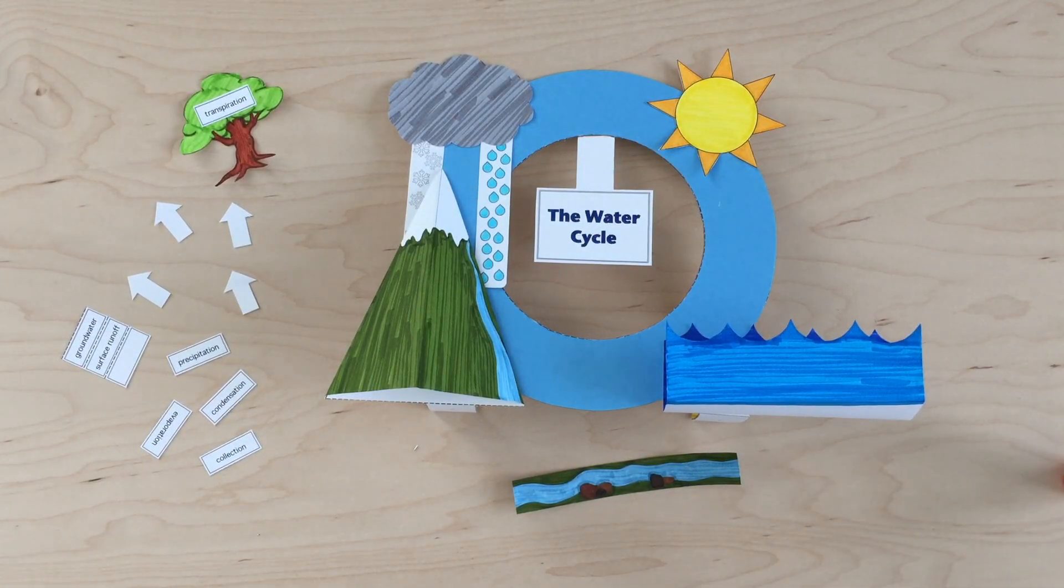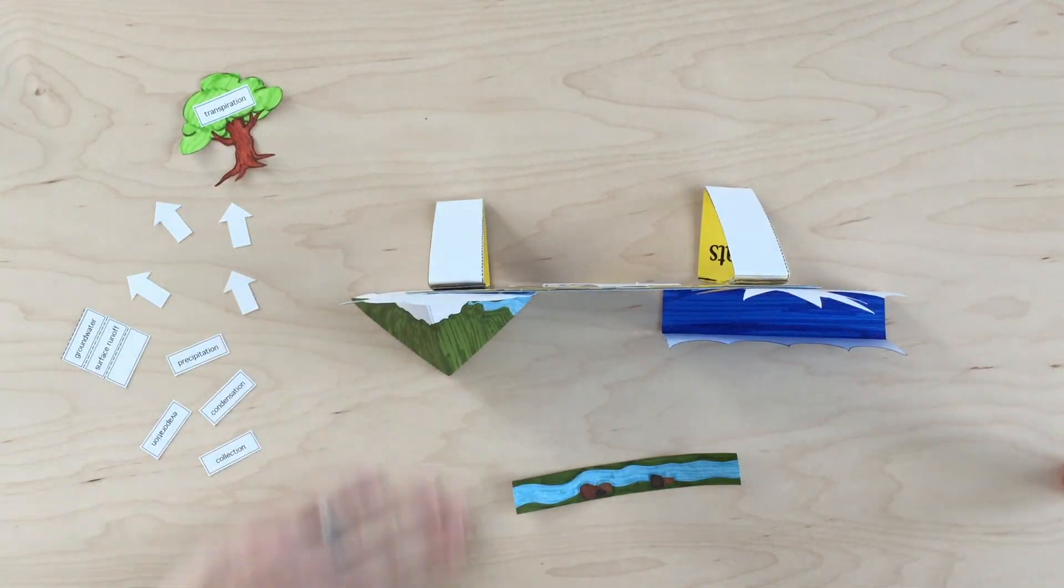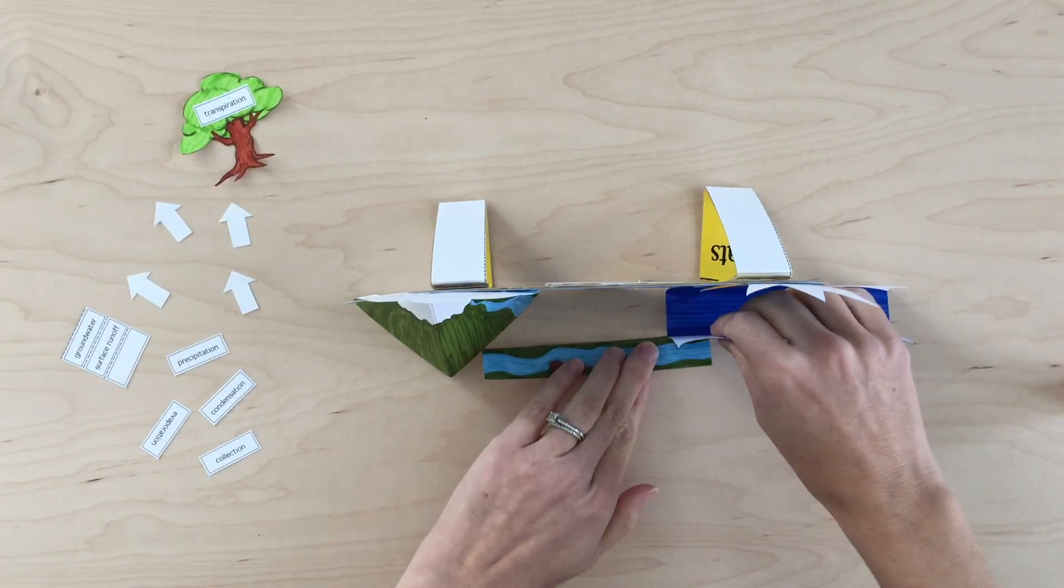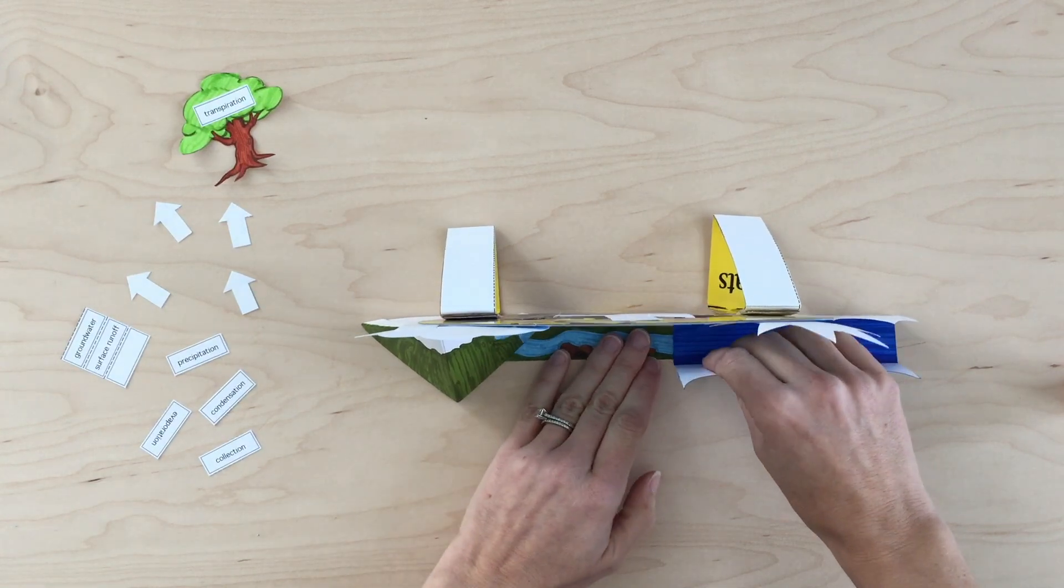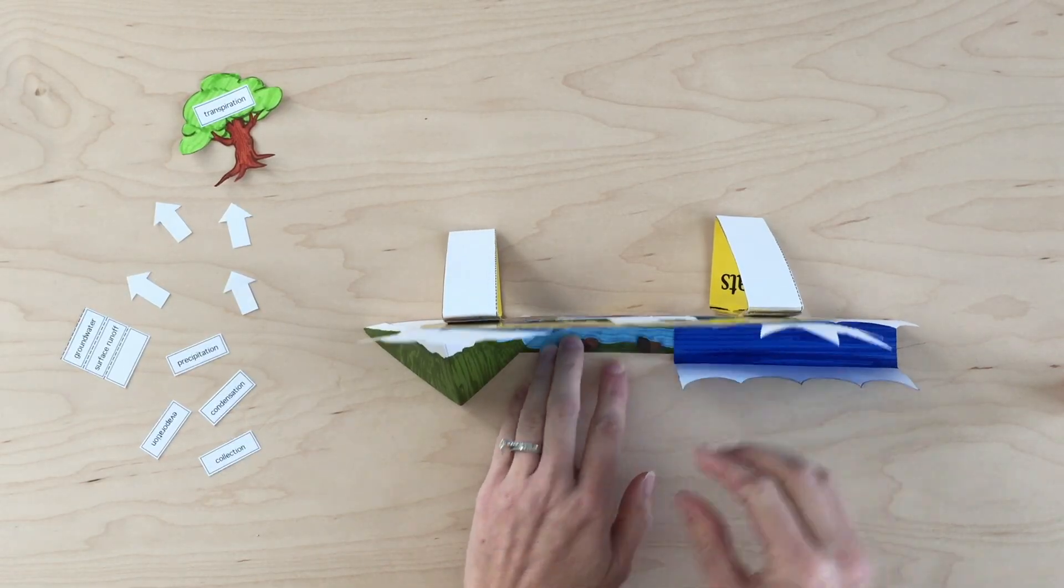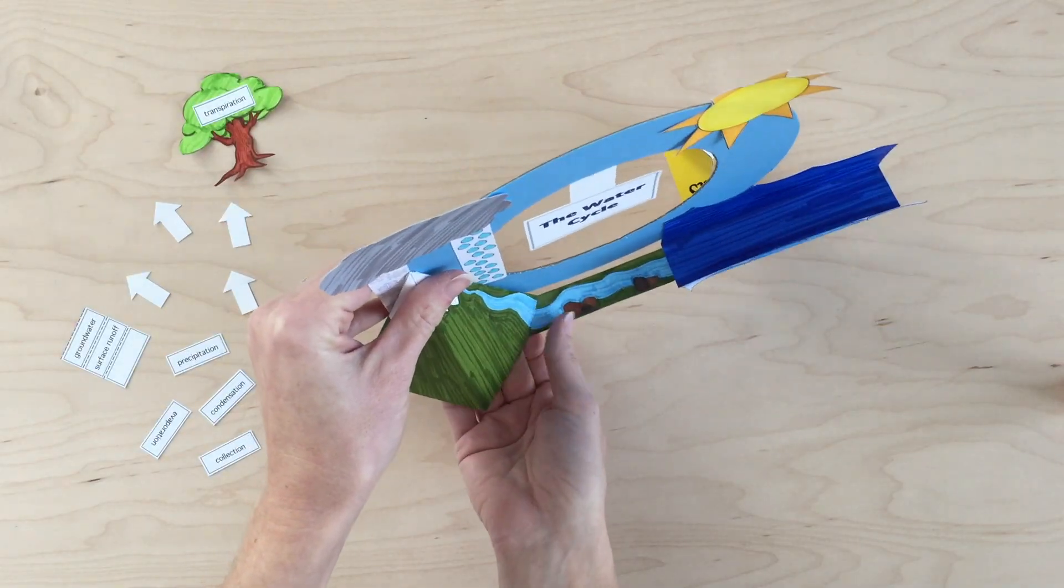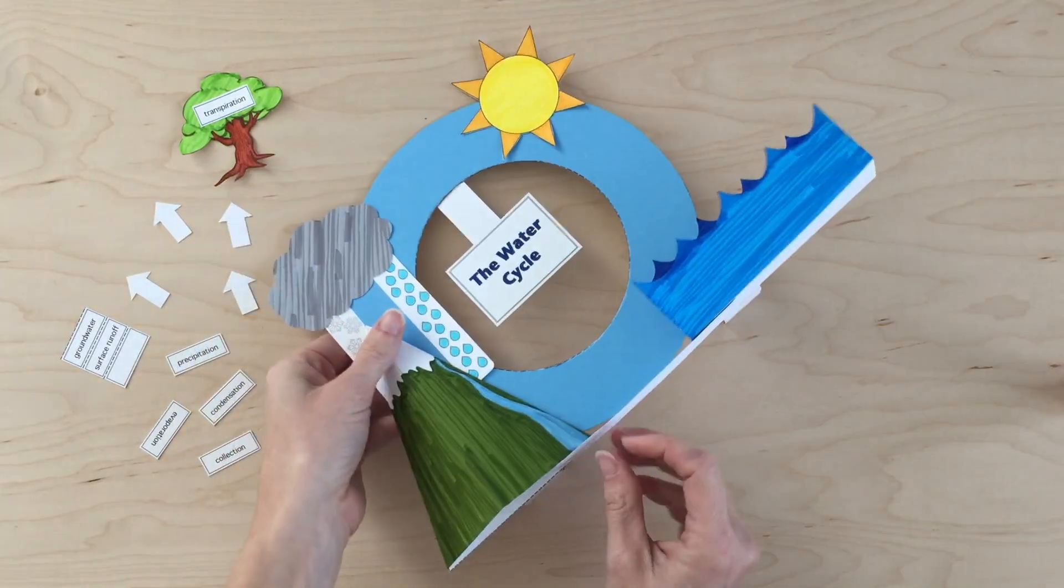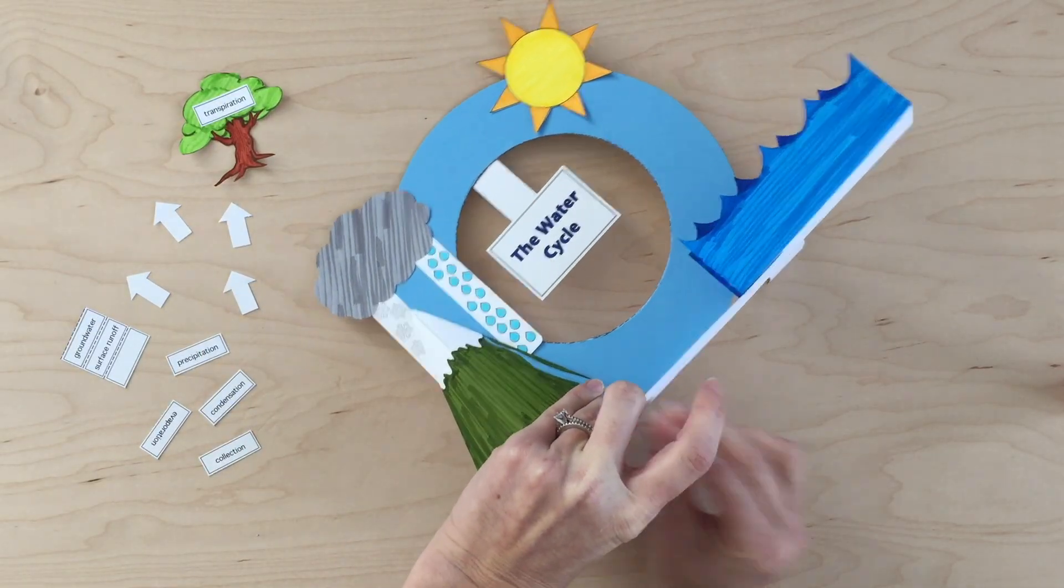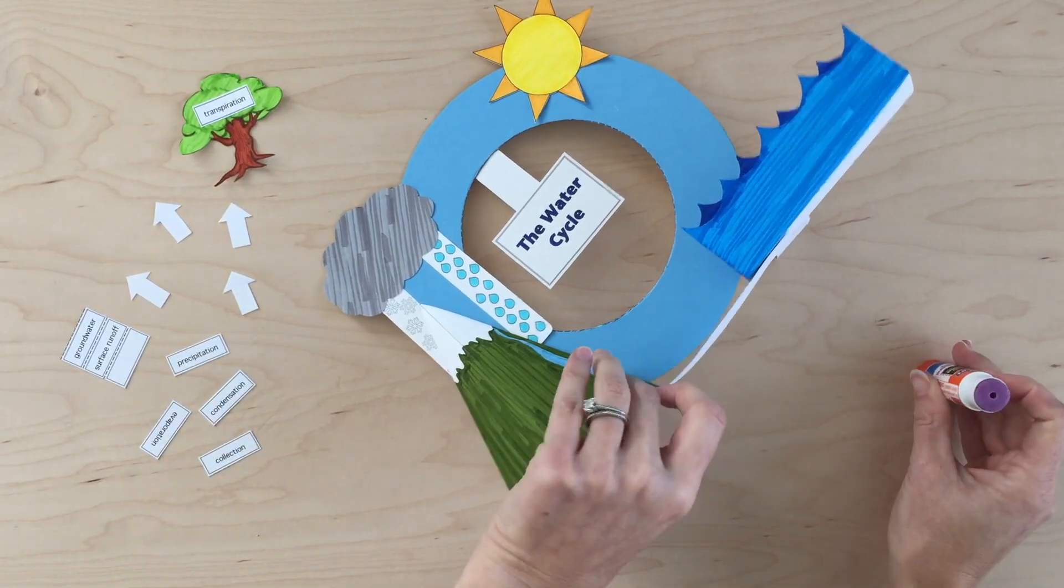So here is the water cycle with the main elements glued on. I'm going to stand it up, which I know you can't see real well, but that's okay because I'm just going to show you how to glue the stream. You're just going to put it right under the ocean, like this. Then this portion that goes under the mountain, if you'd like to you can just fold it up underneath the mountain and either glue or tape that end so that it doesn't fall off.